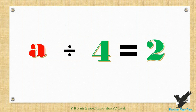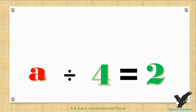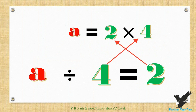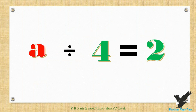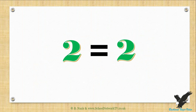First, look to see if you can find the missing answer by working it out in your head. If you can't, use the following method: your answer is found by multiplying the result by the second number. For example, multiplying the result two by the second number four gives the answer eight. You can check this by replacing the letter with the value found — if the answer is correct, both sides will give the same value. In this case, both sides are equal to eight.